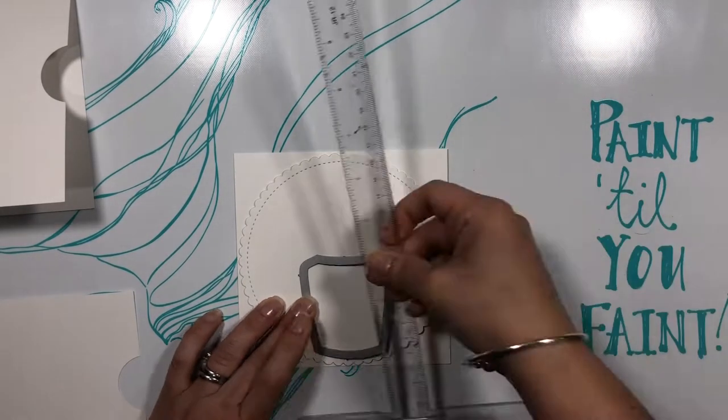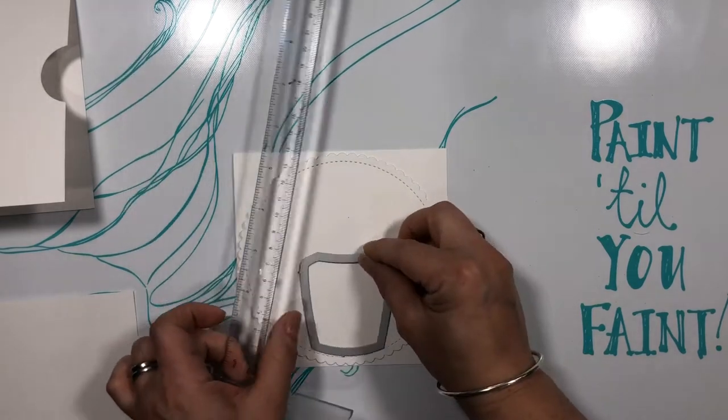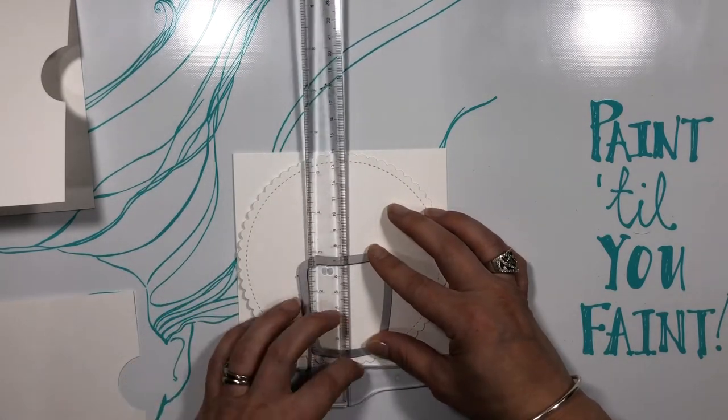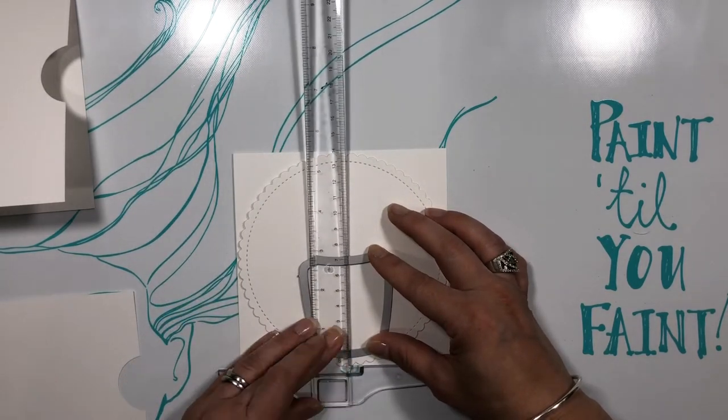The next part of the card was the trickiest only because I wanted to make sure you wouldn't see the brad in the center or the stitched line on the circle.